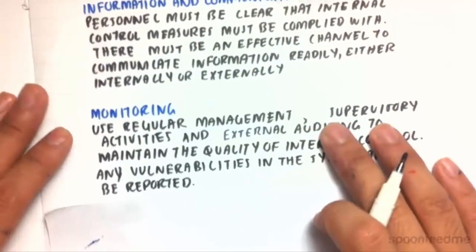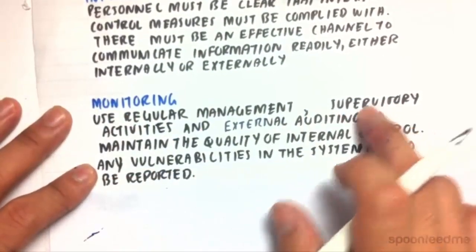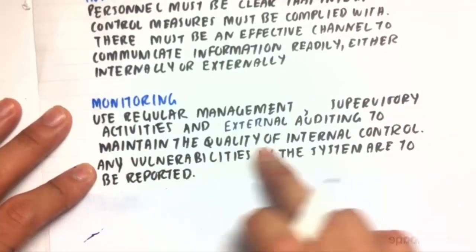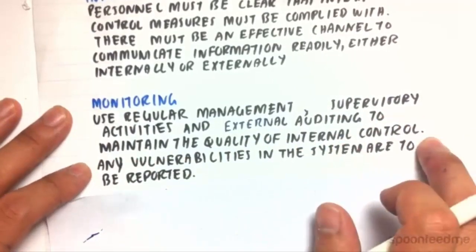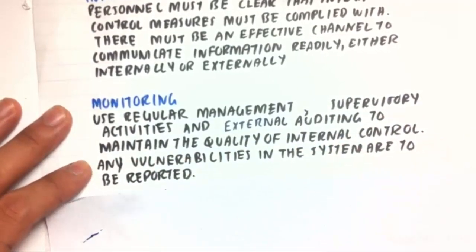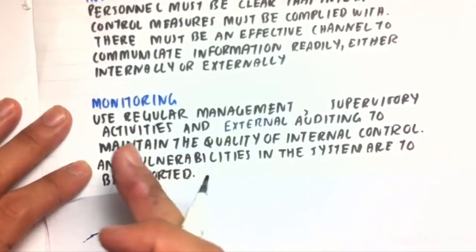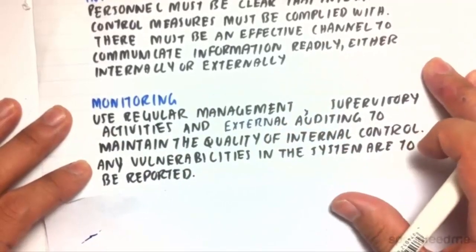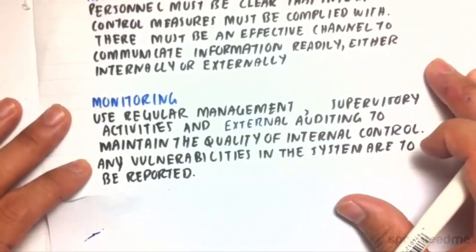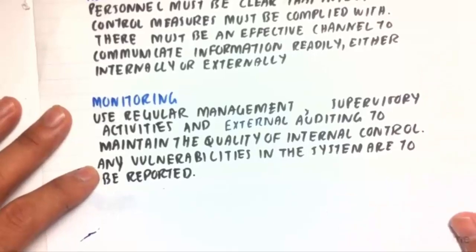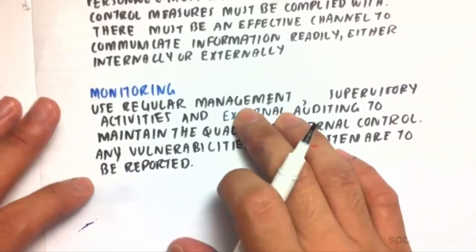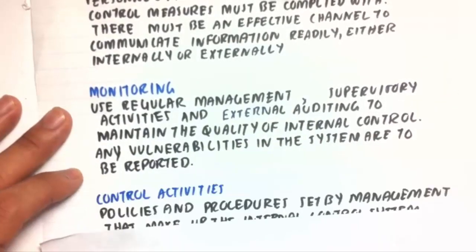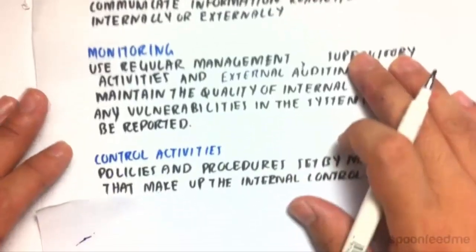Next is monitoring. We use regular management and supervisory activities and external auditing to maintain the quality of our internal control. That helps us make sure that our financial position, financial performance, and everything in our financial statements are recorded so they don't misguide users. Any vulnerabilities in the system are to be reported to supervisors.